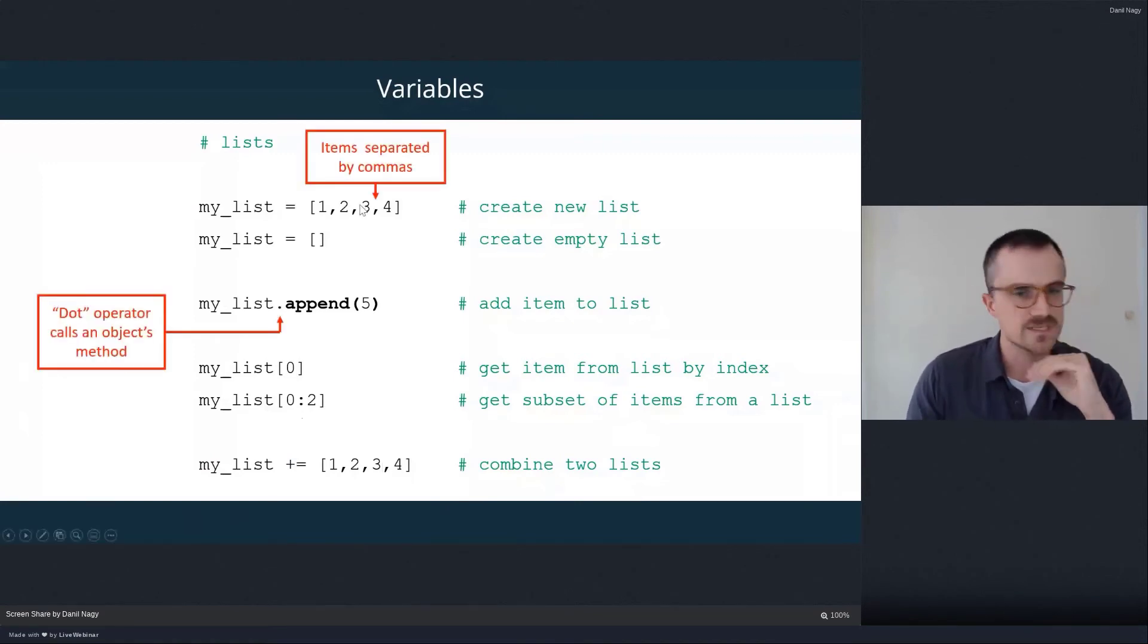So you see here, we separate elements in the list by commas. And then here, the dot operator, which we'll talk about more in a little bit, it actually allows us to run methods or special operations on the specific type of object, which is a list. And we'll talk more about methods later in these slides.